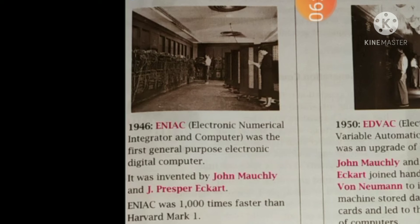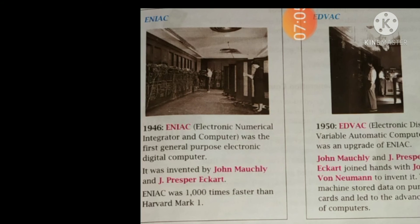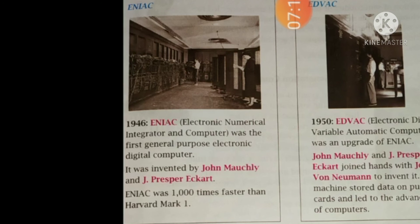ENIAC was invented in 1946. It was the first general purpose electronic digital computer. ENIAC was invented by John Mauchly and J. Presper Eckert. ENIAC was 1000 times faster than the Harvard Mark I calculator.